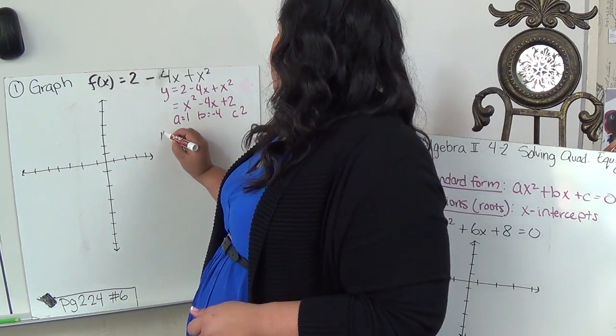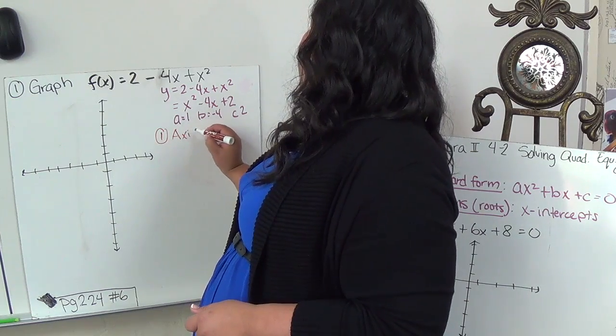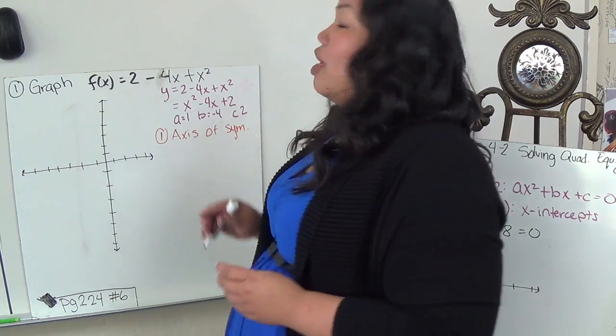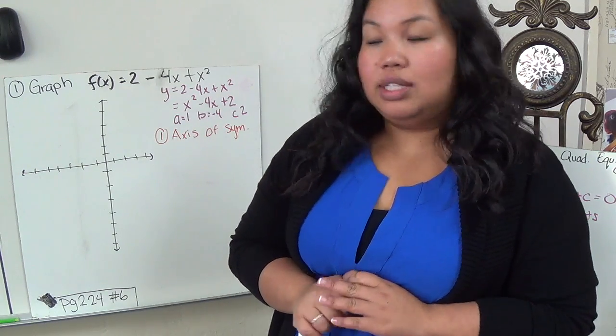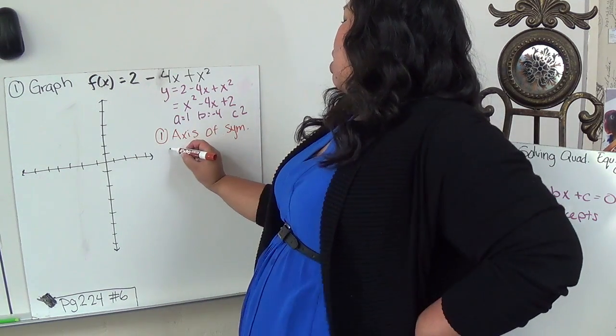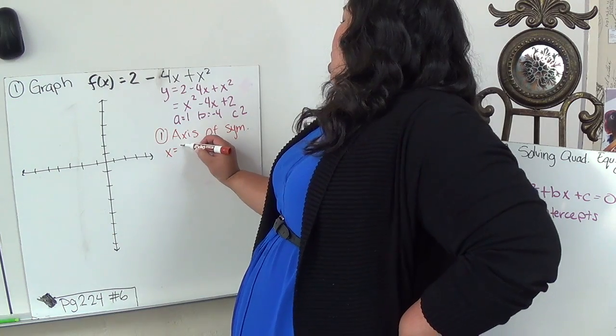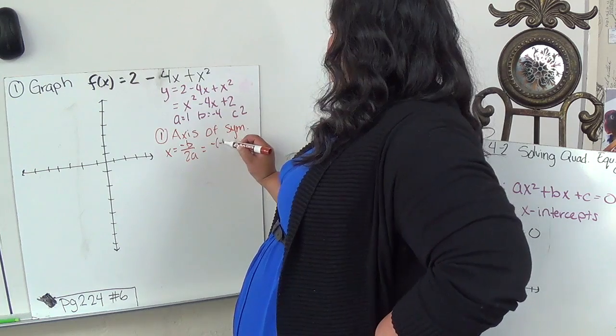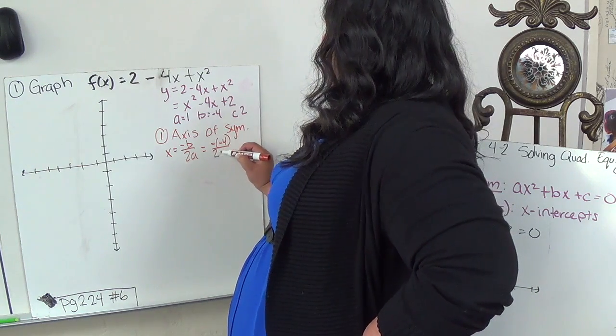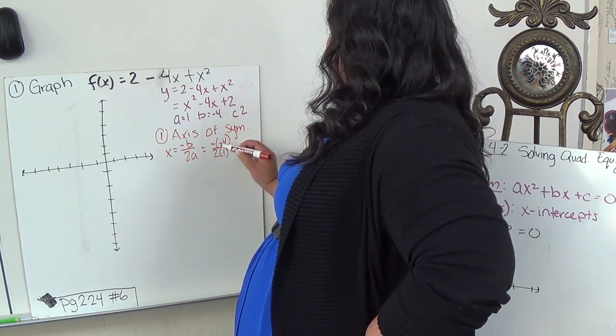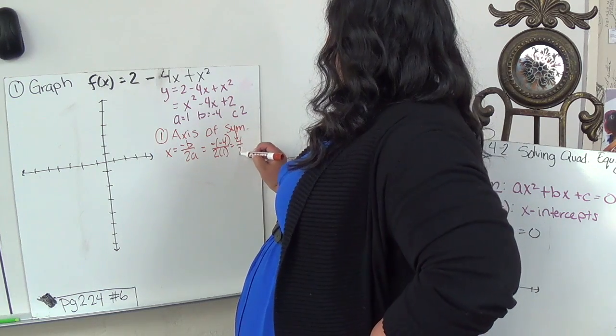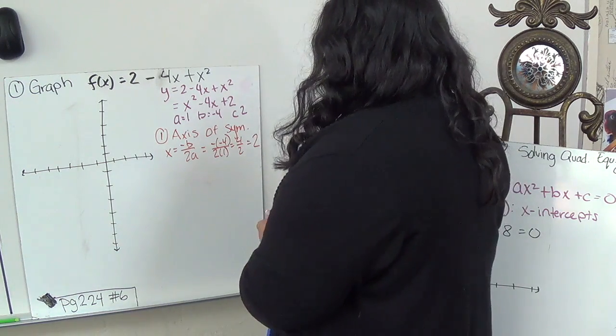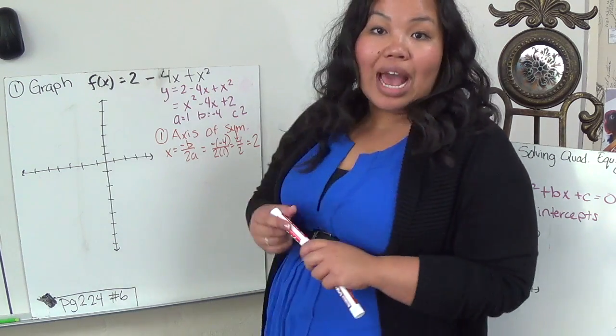Our first step is to find the axis of symmetry. This will also give us the x for our vertex, because our next step is to find the vertex. And the equation is negative b over 2a. So it would be negative negative 4 over 2 times 1, which the negatives cancel out to be 4 over 2, which is 2. That's our axis of symmetry.